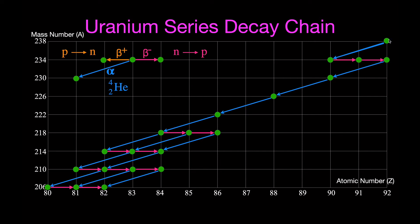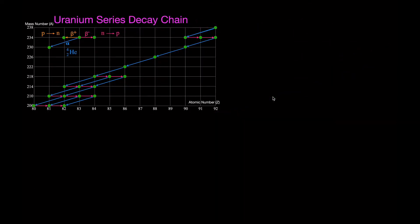Let's start at the top of the diagram. Uranium is atomic number 92. Reading from the diagram, the mass number is 238 and the atomic number is 92 — so this dot represents uranium-238. We're going to go through four or five decays and then show the last two steps down to lead-206. You can see how we can arrive at lead-206 via two different paths.